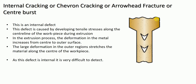Here, this one is the extruded object, and at the inside of this extruded object, cracks have been developed — these are the internal cracks. This defect is caused by the development of tensile stresses along the center line of the workpiece during extrusion. The deformation in the metal increases from the center to the outer surfaces.